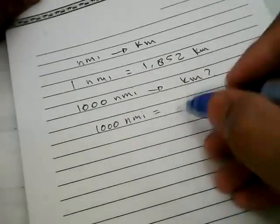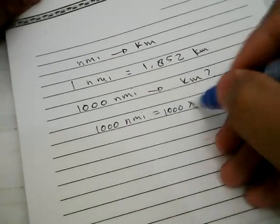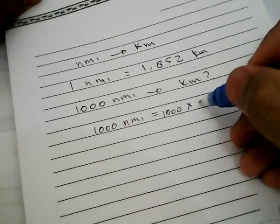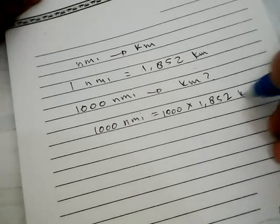It equals to 1,000. We write this 1,000 again and we multiply this 1,000 with this number: 1.852 kilometers.